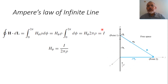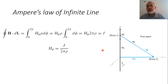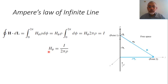The current enclosed by this closed path is the filament current I. So, H_phi is simply I over 2πρ, which is the same result obtained from Biot-Savart law, with a much simpler form. This is the magnetic field of an infinite line current obtained by Ampere's law, and it is the same result for the magnetic field obtained from Biot-Savart.